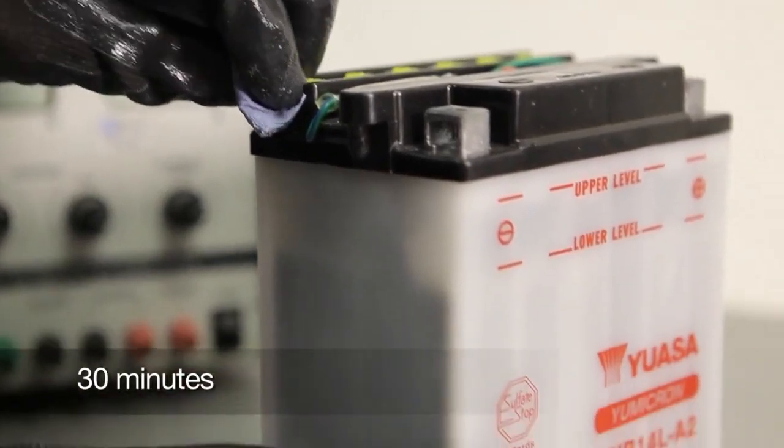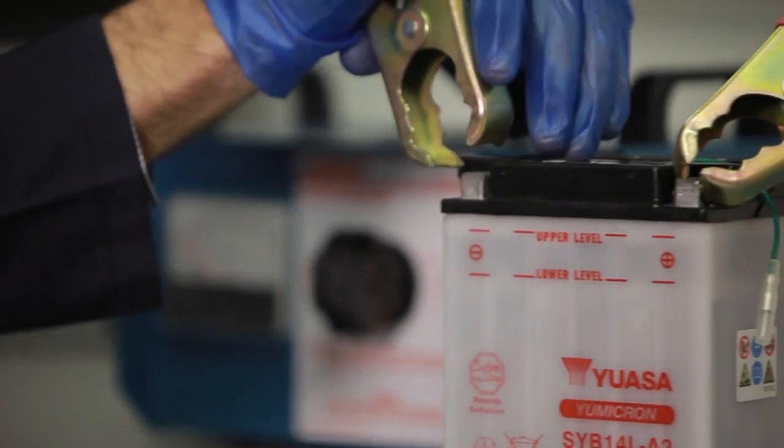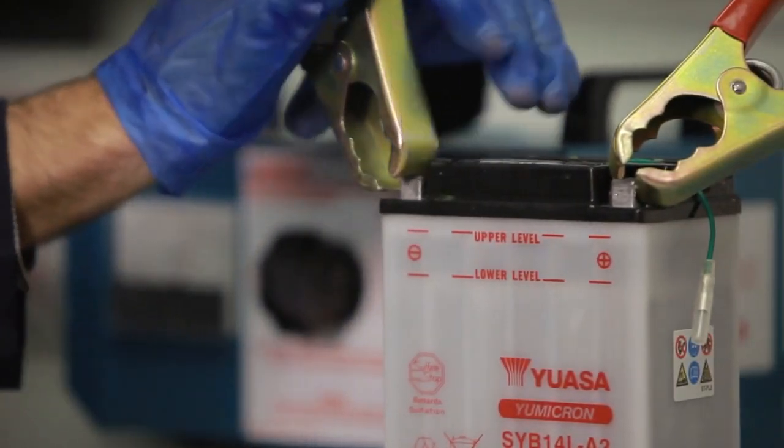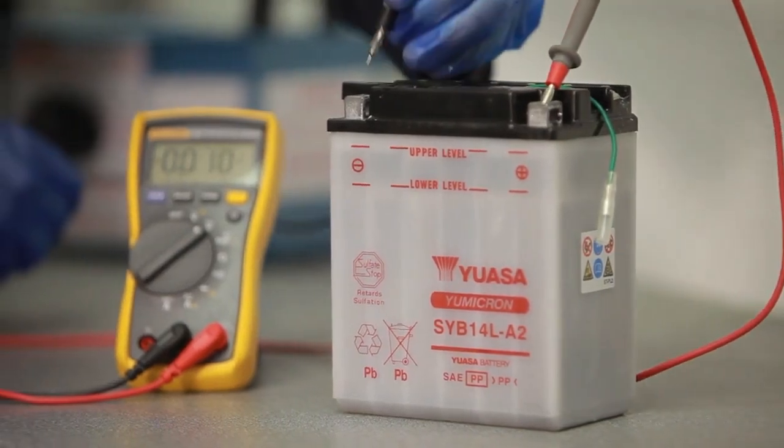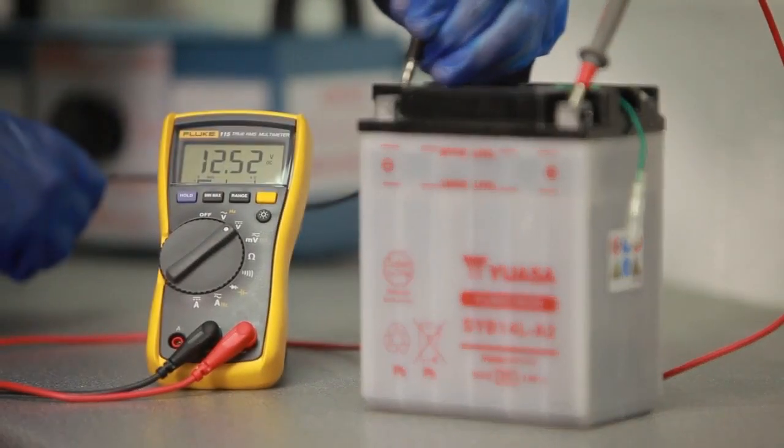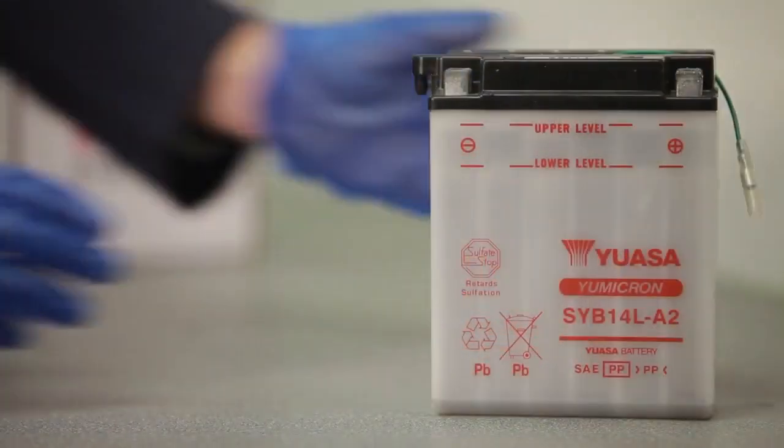Allow the battery to stand for at least 30 minutes, then load test it at 3 times its ampere hour rating for 15 seconds, or use an automatic battery tester to determine the battery's condition, and then check the voltage. This should be a minimum of 12.4 volts on a 12-volt battery. The battery is then ready to be fitted.